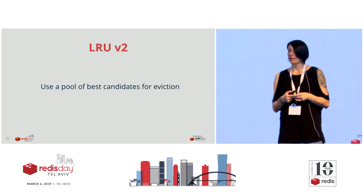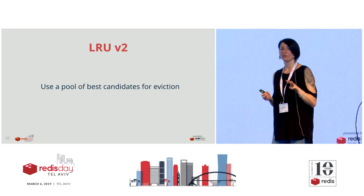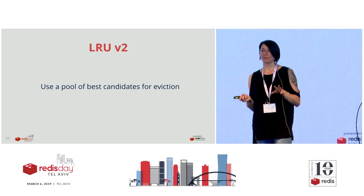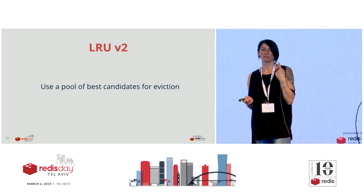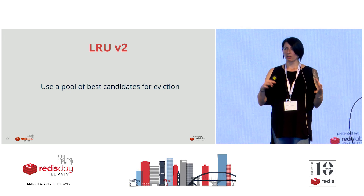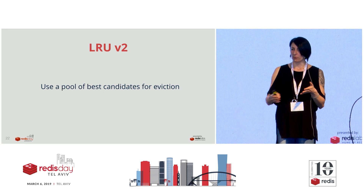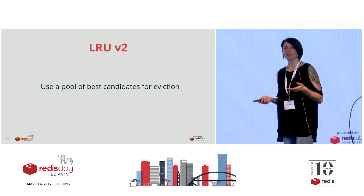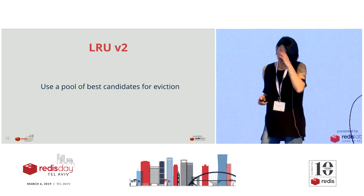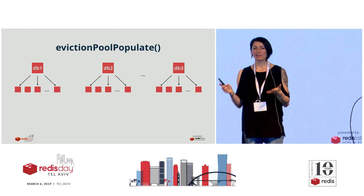He came up with an idea to use a pool of best keys. Instead of getting three or X random keys every time and evicting one among just those keys, we would still be sampling keys but putting all of them in a pool. We would be populating the pool with good candidates and in the end, we would always be evicting from the pool itself. Let's go into a little bit more detail about exactly how that happens.